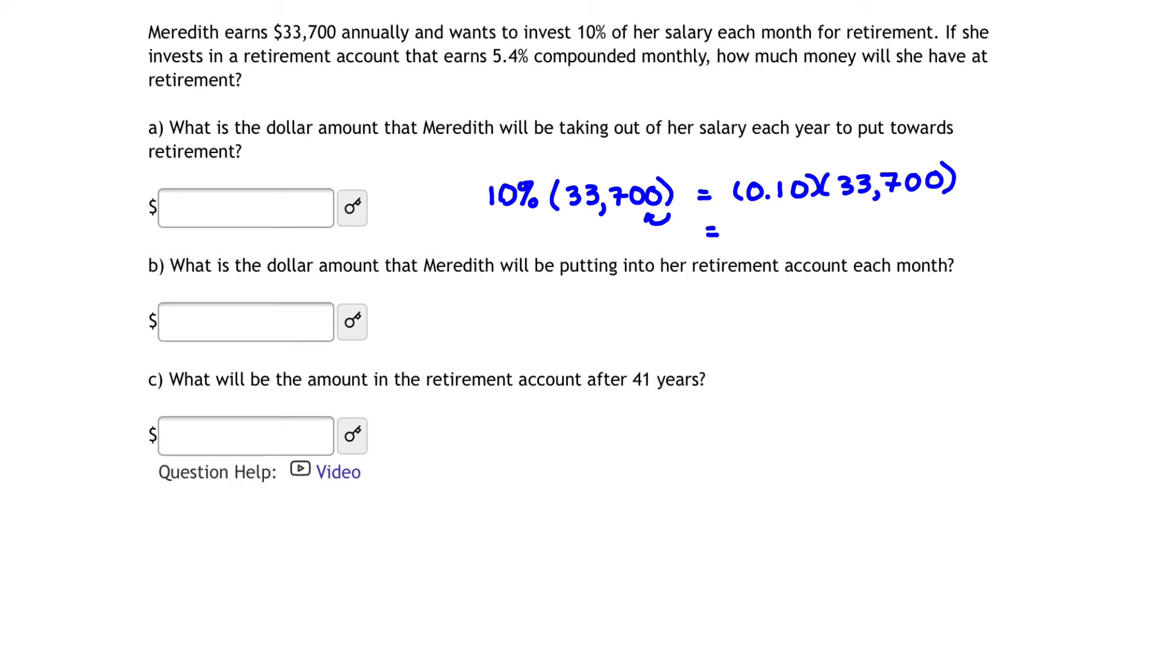You can also get that on your calculator. When you take 0.10 or 0.1 times $33,700, you should get the amount $3,370. And that's the amount each year that Meredith is going to be investing towards retirement: $3,370.